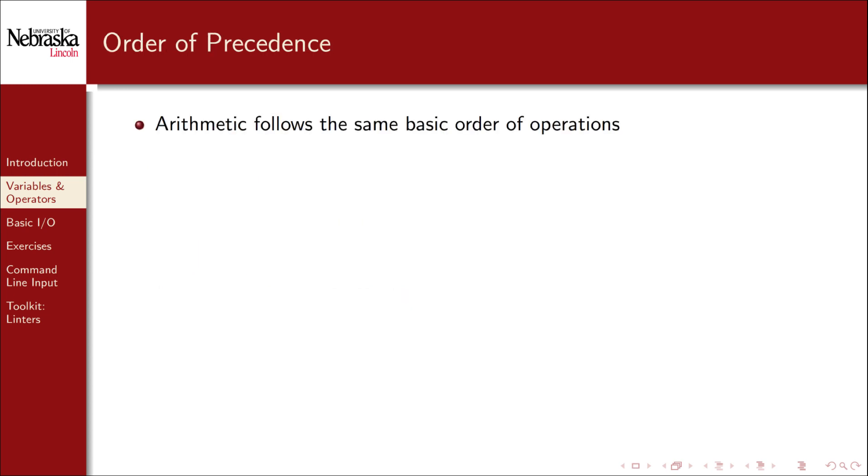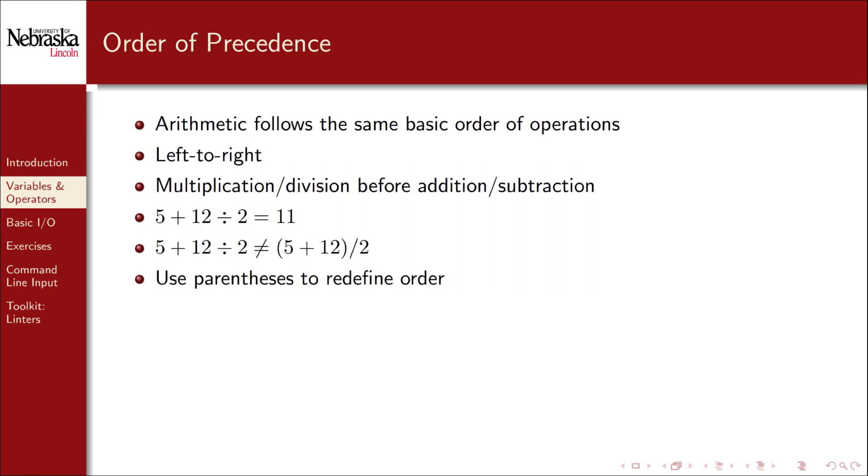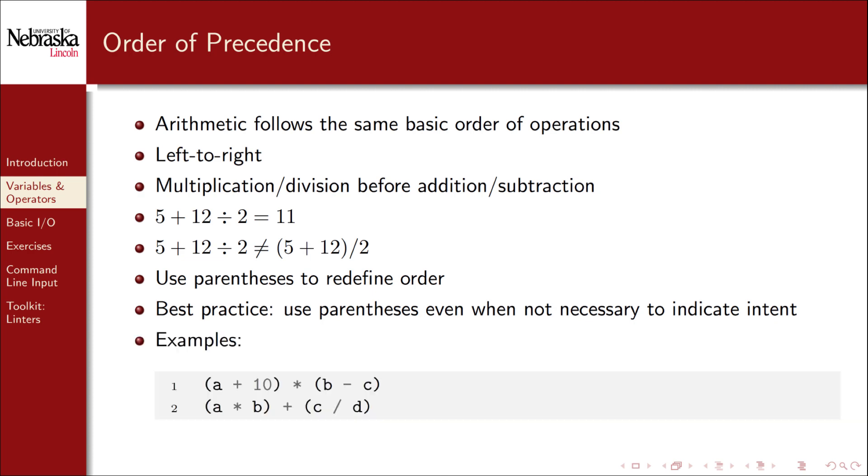Just as in mathematics, arithmetic operators in code follow the same basic order of operations or precedence rules. In general, operations are performed left to right, with multiplication and division performed before addition and subtraction. For example, the division in this expression takes precedence over the addition, and the result is 11. It is not the same as if we had placed parentheses around the addition, giving it a higher order of precedence. Likewise, in code we can use parentheses to redefine the order in which the expression is evaluated. In fact, it's best practice to use parentheses even if they're not necessary to indicate intent and make code more readable. Here are a couple of examples. In the first, the parentheses change the order of operations. In the second, they don't change the expression, but they do make it more readable.